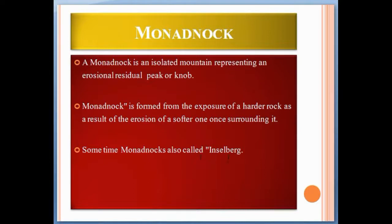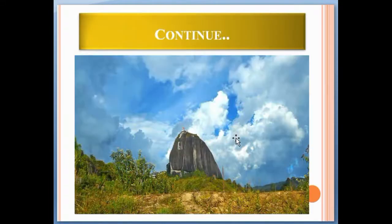A monadnock is sometimes also called an inselberg. It is formed due to the erosion of softer rock in hard rock terrain — when the soft rock is eroded away, the hard rock is left in the area. See here, this is the monadnock. As you can see, the surrounding rock is eroded away while this knob or peak remains.